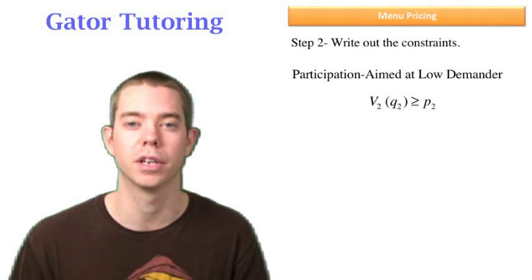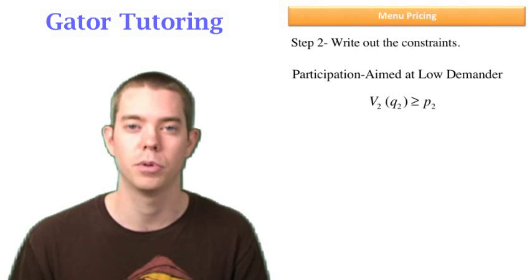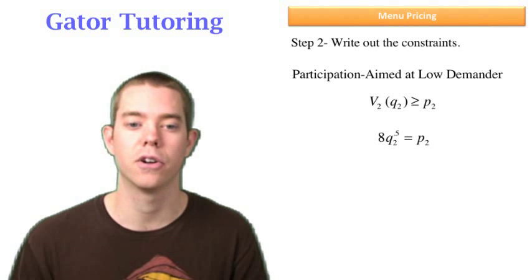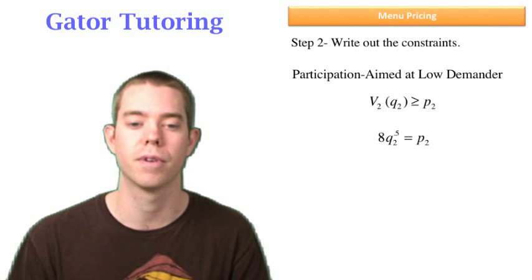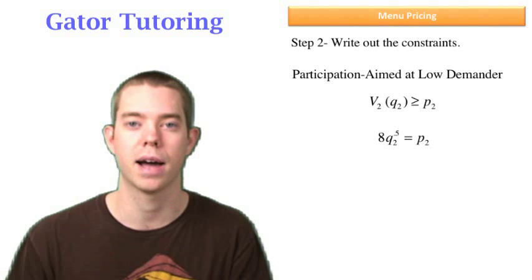We're going to always set these equal because we assume if they are equal, he will in fact purchase it. But think about it as greater than or equal to. It will help you really understand. In this case, we can plug in his value function, which is 8q2 to the 0.5. That must be, we're going to go ahead and set it equal to the price of that smaller package.